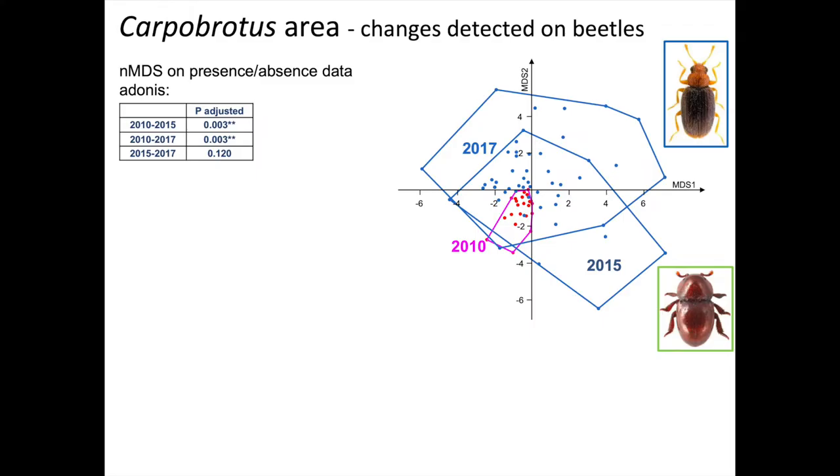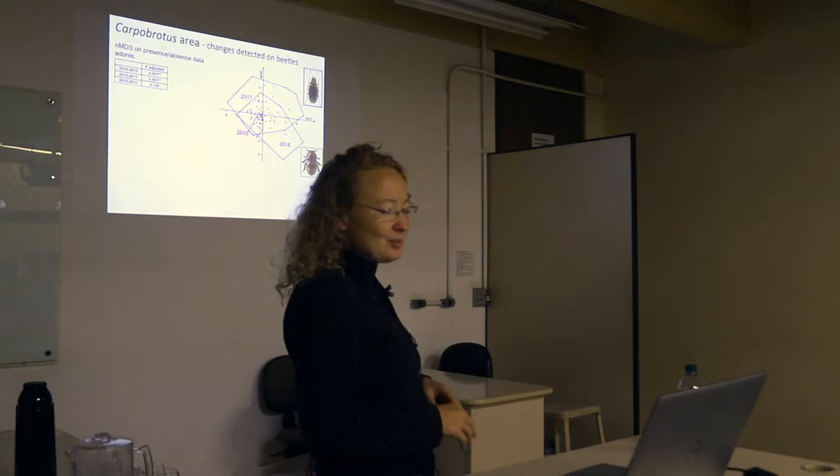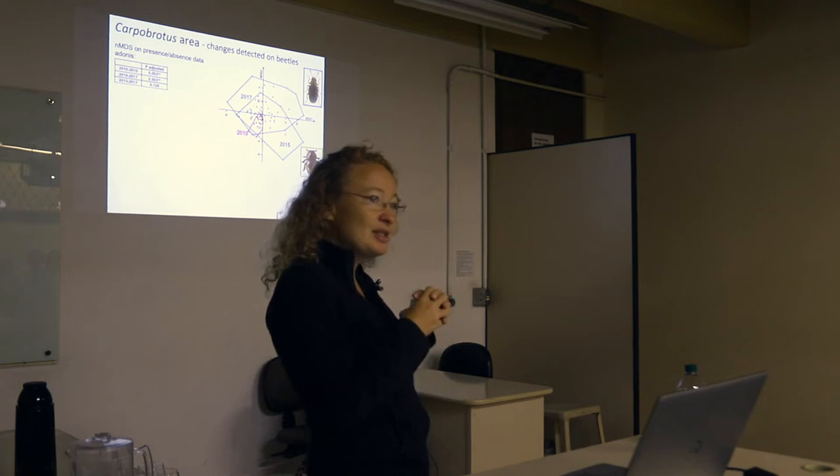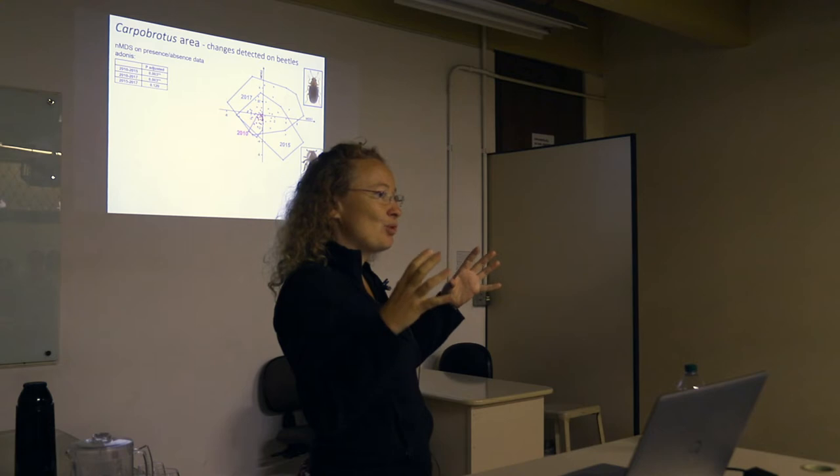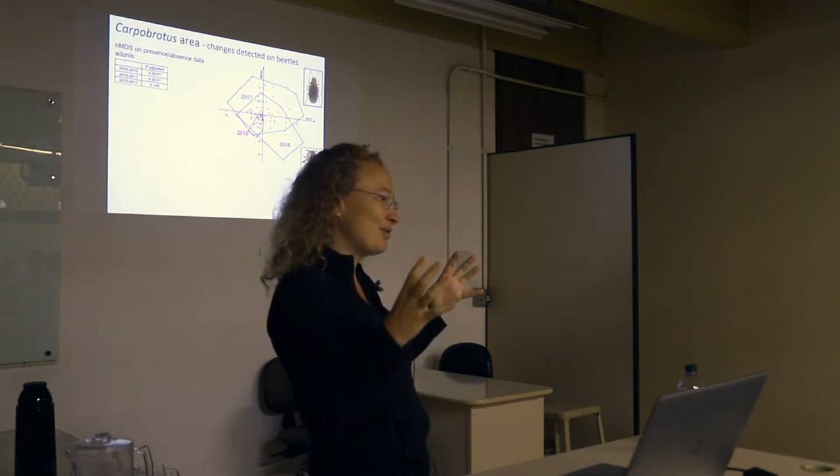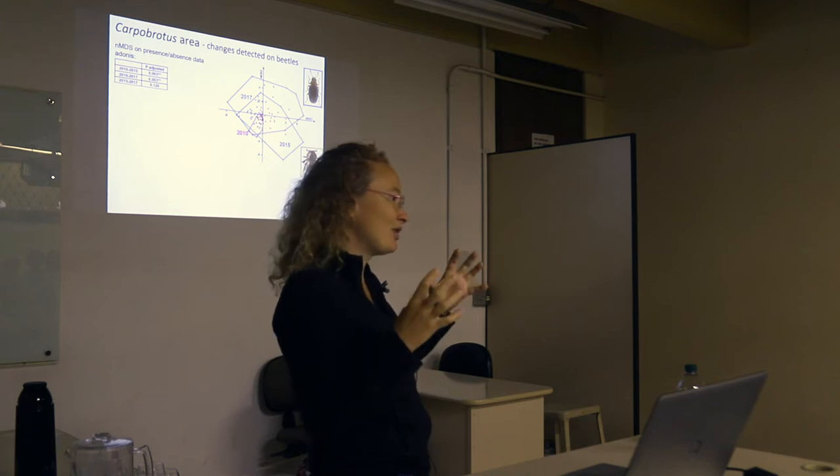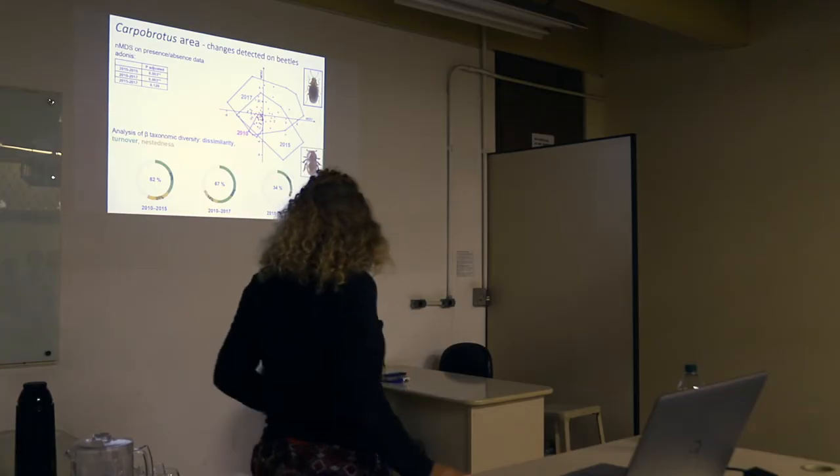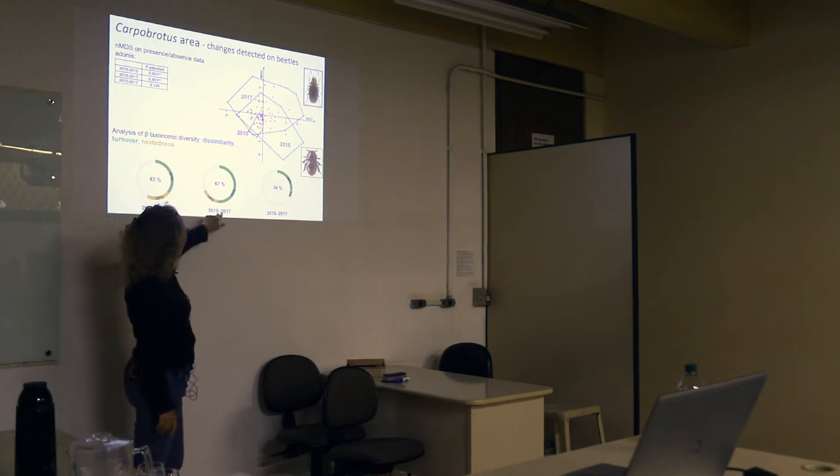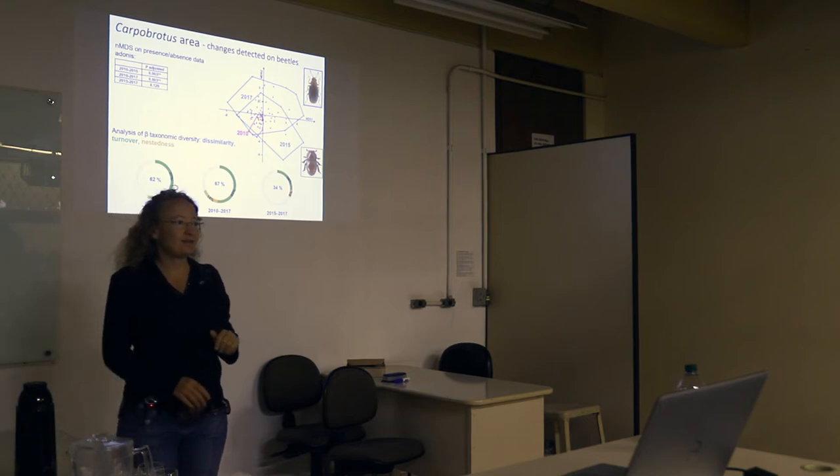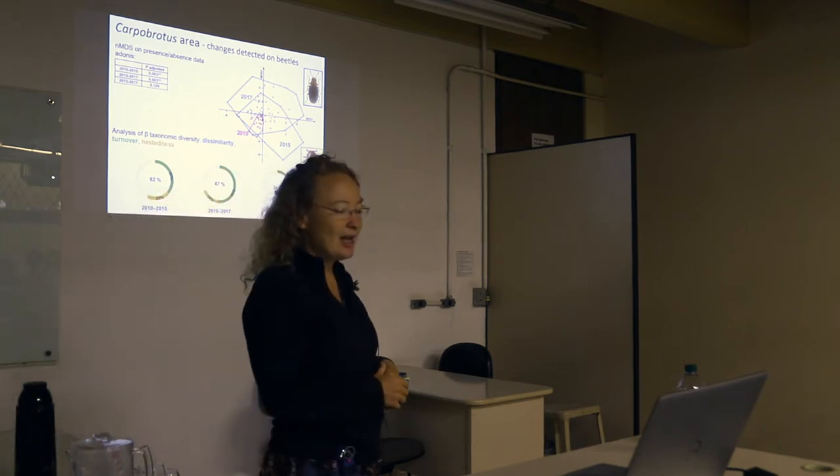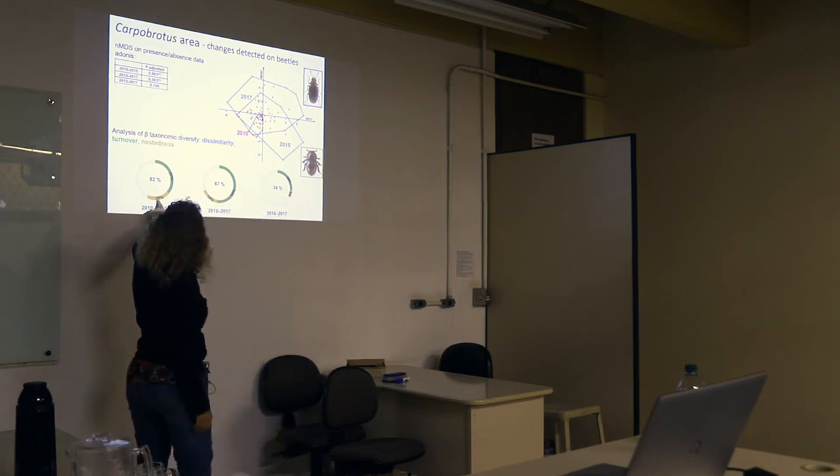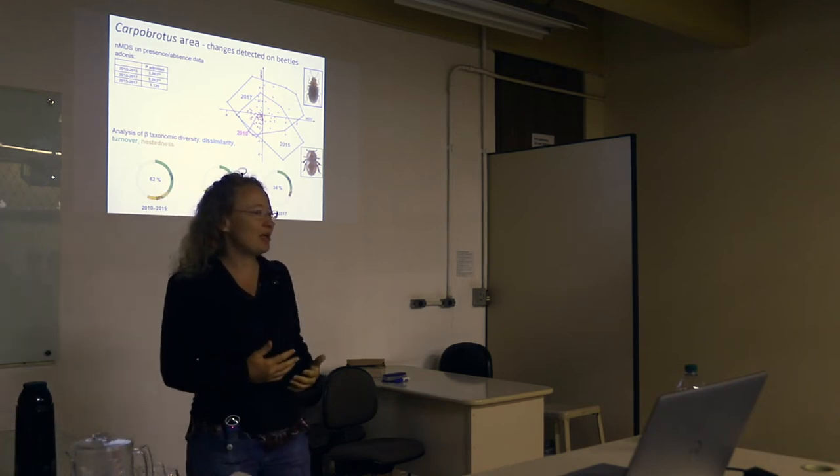For the beetles, you can see also that there are significant differences between 2010 and after eradication. You can also see that in 2010, the traps were very similar with each other, while 2015 and 2017, they are more different because the vegetation is more heterogeneous. And of course, the beetles falling in the traps, it's more heterogeneous as well. So we gain in heterogeneity. Here you see comparing before and after, there's about 60% difference between before and after on the species composition. And a lot of it is due to turnover, so species being replaced. But we also have a gain of species with the nestedness here. So there's new species coming in and some species being replaced.